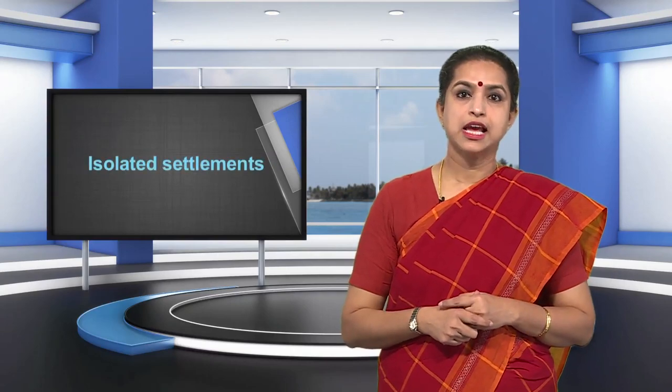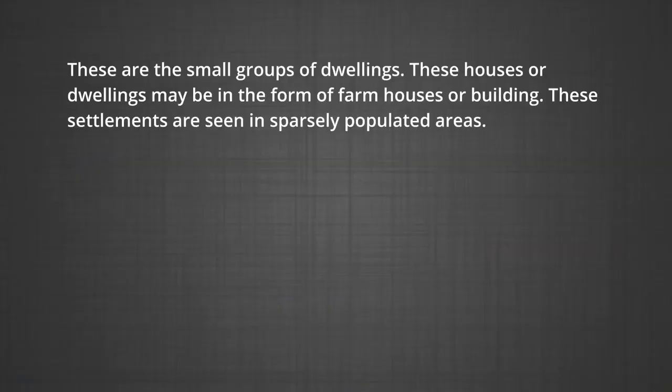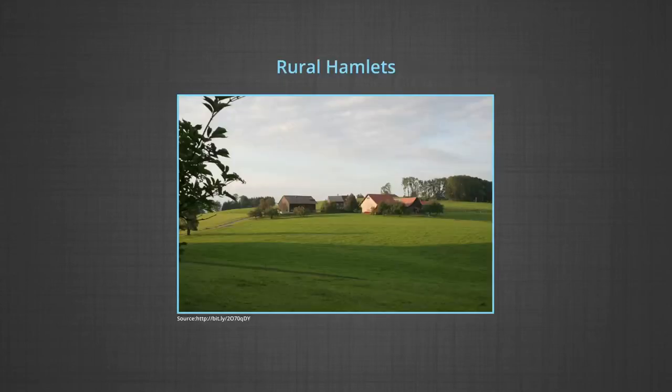Another way of classifying rural settlements is based on population size. Some categories are: isolated settlements — in rural areas, some settlements might have only a few isolated buildings or a group of buildings belonging to one family. These settlements are developed on extensive farms owned by a single owner, with scattered houses built on private farms. Vast ranches in the United States, Canada, or Australia are examples. Hamlets are small groups of dwellings — farmhouses or buildings seen in sparsely populated areas. A hamlet normally consists of a few houses with a post office or a place of worship, and is slightly larger than isolated settlements.